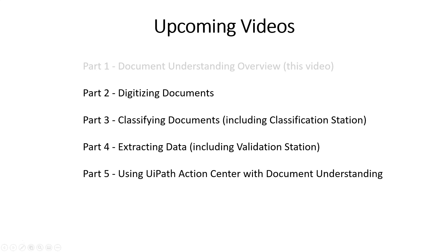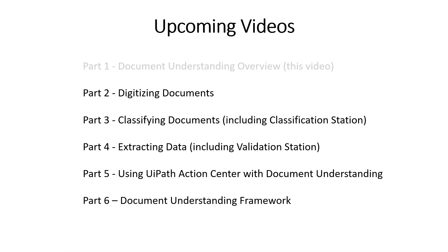Part five is using UiPath Action Center with Document Understanding. I've done a couple of videos on my channel about Action Center, and in fact those two videos are the most popular on my channel — so check those out, there's a link to them in the description below, and I'll pop up links at the end of this video also. But combining Action Center with Document Understanding is an incredibly powerful combination, and you'll see that in video number five. And then finally, in the sixth video, we will look at the Document Understanding Framework. That's a template for UiPath Studio that makes it easy to build robust document understanding automations. It's kind of like — not entirely, but kind of like — the Robotic Enterprise Framework, but just for document understanding.